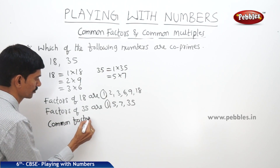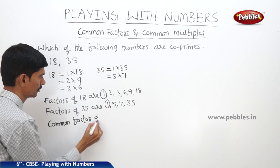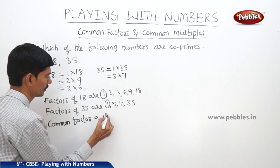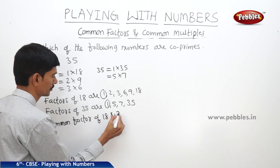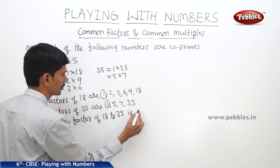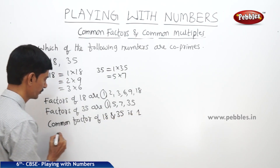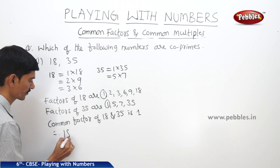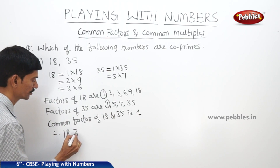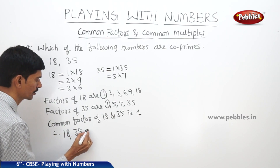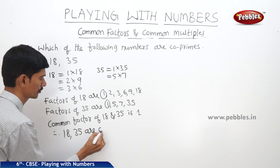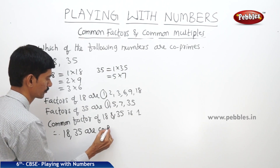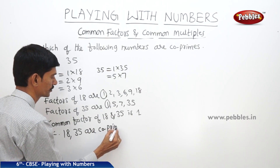The common factor of 18 and 35 is 1. Therefore, 18 and 35 are co-prime numbers.